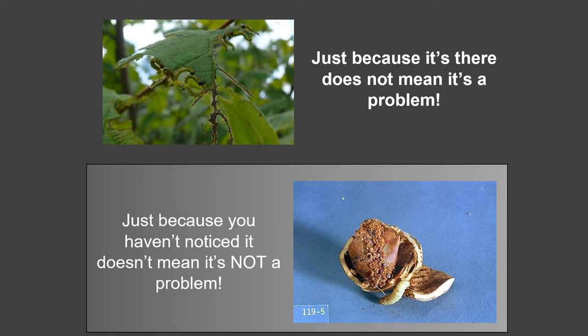On the flip side, just because you haven't noticed a pest does not mean it's not a problem. There are insects that may be cryptic or active at times when you're not looking that can attack the nuts. For example, the filbert worm is a problem in other areas, and if you aren't looking for them at the right time, you can have a lot of loss at harvest when it's too late to implement control. That is why we monitor the crop and do integrated pest management — to balance out when we do and do not need to act.